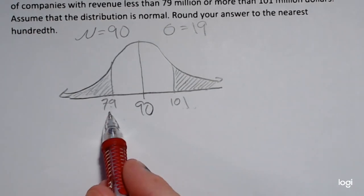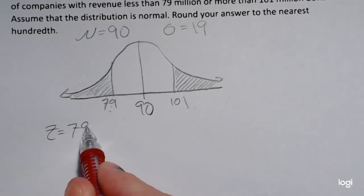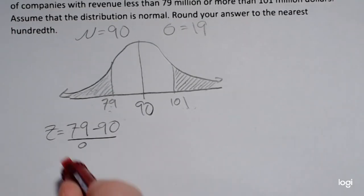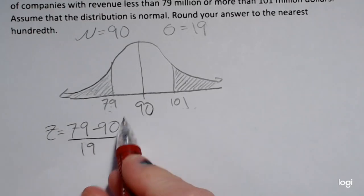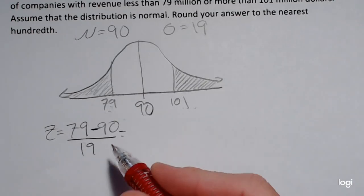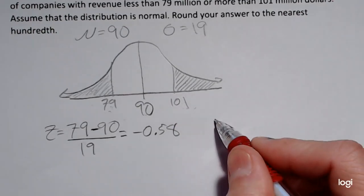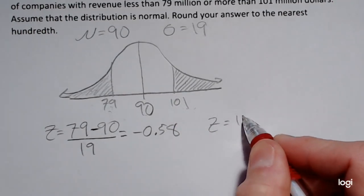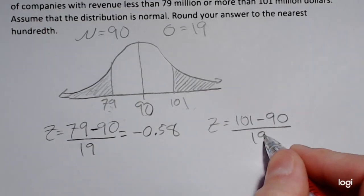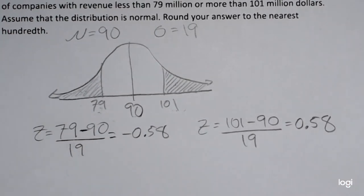For the Z-score that corresponds to 79, the formula is your x value minus the mean divided by the standard deviation. Since I'm below the mean and I'm subtracting, I expect this Z-score to be negative — and rounding to two decimal places, that's negative 0.58. For the upper Z-score, again I'm going to subtract the mean from that x value and divide by the standard deviation, and that's positive 0.58 rounding to two decimal places.